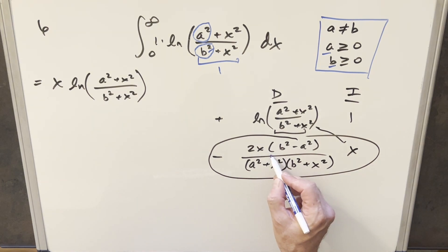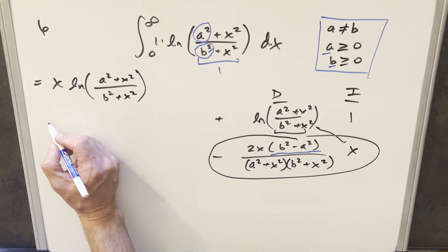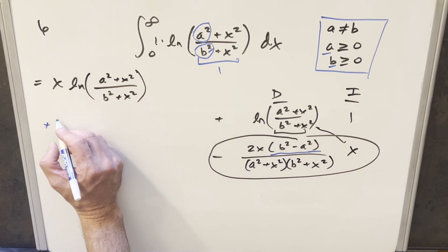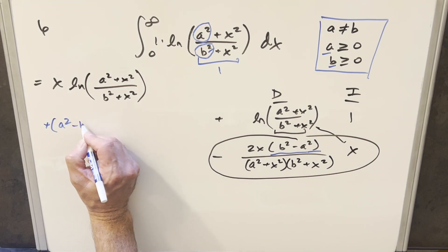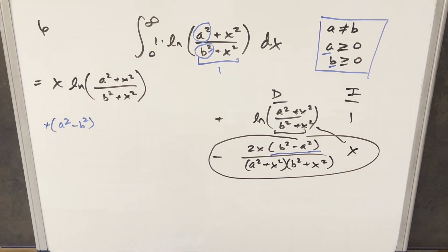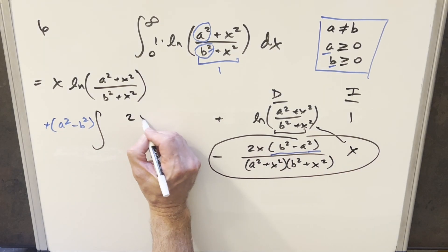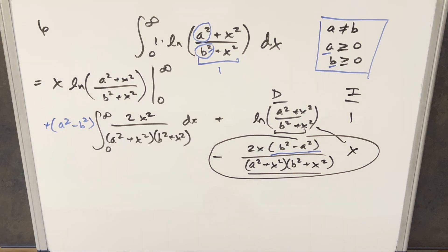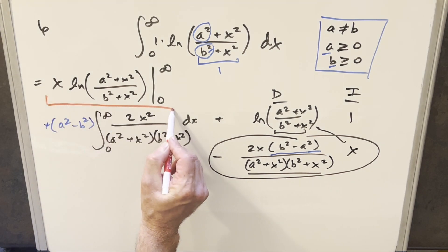This constant here I can pull out front of the integral and distribute the minus sign in. So distributing the minus in, I can write it as a plus and then reverse the sign, writing it as a squared minus b squared. And then multiplying the x by 2x, we end up with 2x squared in the numerator over that denominator. But then let's evaluate the first boundary piece and see if we can get that part finished.